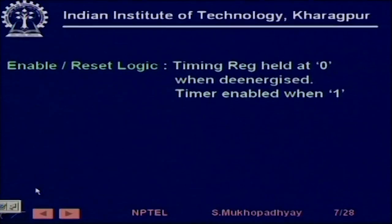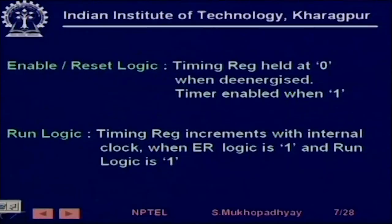To recapitulate: we have enable-reset logic where the timing register is held at 0 when de-energized, and the timer is enabled when 1 — at that point the timer is ready to receive clock pulses and increment its values. We also have run logic where the timing register increments with the internal clock when the enable-reset logic is 1 and the run logic is also 1. This is the basic timer.